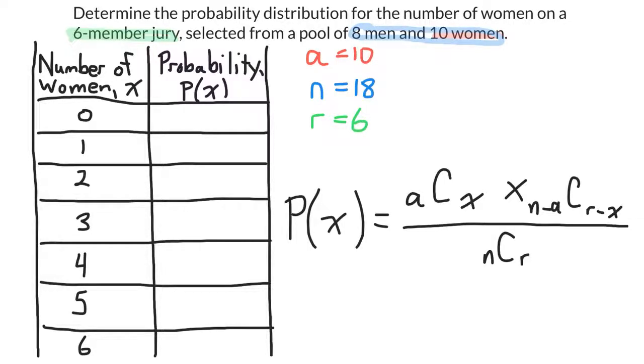So here's my probability formula for a hypergeometric distribution. I know the values of A, N, and R, so I'll just replace those. So that's how my formula looks now.